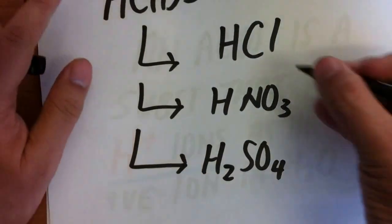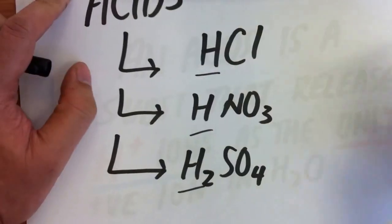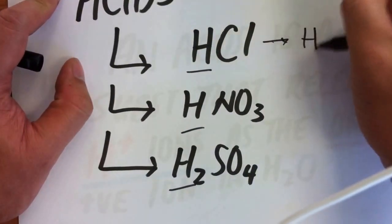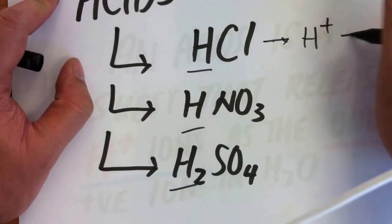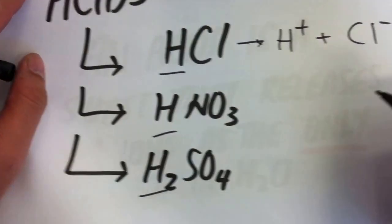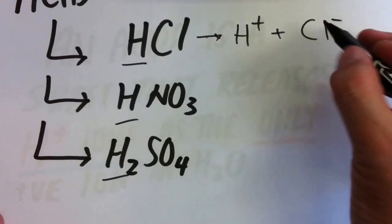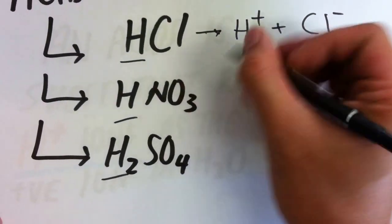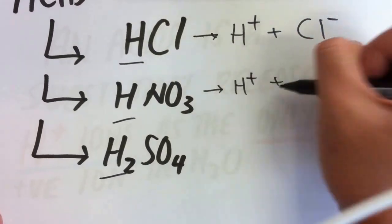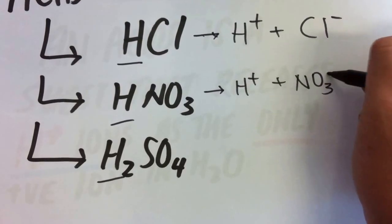If we look carefully, you'll notice that they all contain nitrogen. When HCl is in water, because it is a strong acid, there will be complete dissociation. You will get H plus and Cl minus. HNO3, you get H plus, NO3 minus.